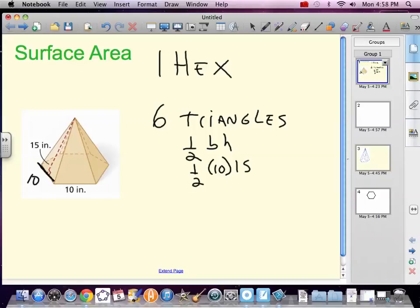Five times one-half ten is 75, right? Then how many of those are there? Well there's six of those. 450 centimeters squared, because two 75 is 150, another 150 is 300, another 150. OK, now we need the hex.